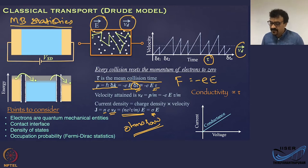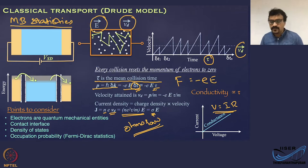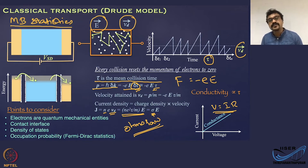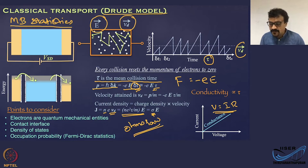This is another statement of Ohm's law — the usual statement being V = IR. This result comes from treating transport with classical Maxwell-Boltzmann statistics, and this model is called the Drude model.